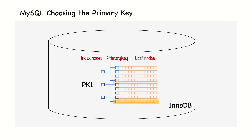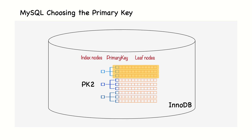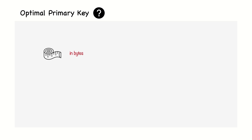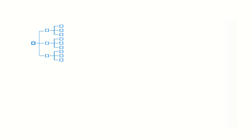The primary key can impact the ratio between random and sequential I/O, the size of secondary indexes, and how many pages need to be read into the buffer pool. The primary key for InnoDB tables is always a B-tree index. In this section, we're going to understand why an optimal primary key is as small as possible, keeps increasing monotonically, and groups the rows we query frequently within short distance of each other.